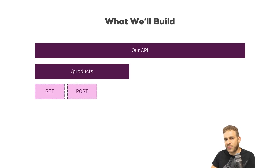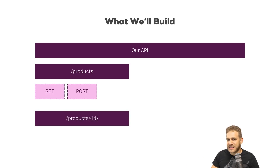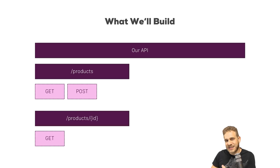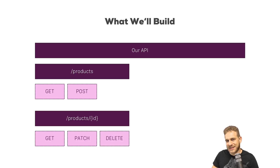POST requests to add new products. I also want to be able to target the individual product by ID and get information about that product, PATCH that product — so change it, update it — and DELETE this product so that we can get rid of it.